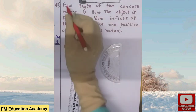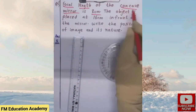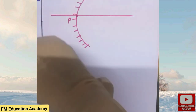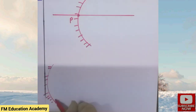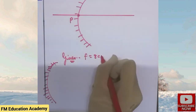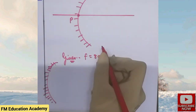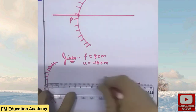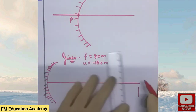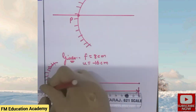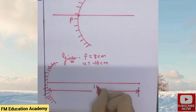Question 5: the focal length of a concave mirror is 8 cm. The object is placed 16 cm in front of the mirror. We need to find the position and nature of the image. f = 8 cm, object distance u = −16 cm (negative because it is a concave mirror). Let me draw the concave mirror with the focal length marked at 8 cm from the pole.